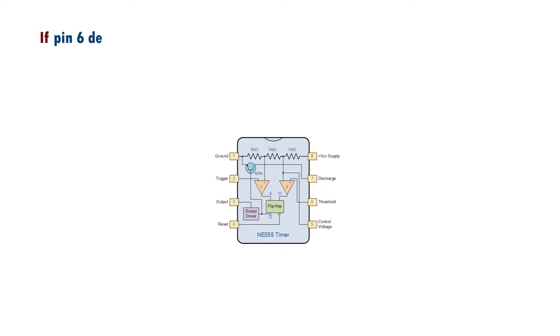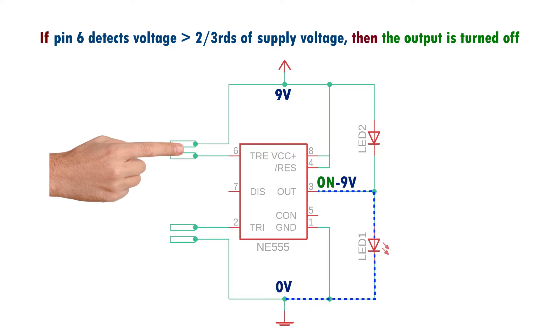Similarly, if pin 6 detects a voltage greater than two-thirds of the supply voltage, the output turns off. So when I touch both these contacts, the voltage at pin 6 will be nearer to supply voltage that is 9 volts and because it's more than two-thirds of supply voltage, the output turns off.